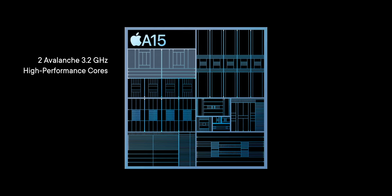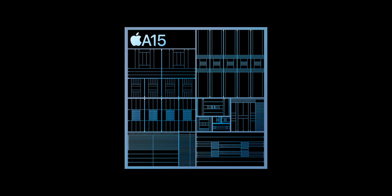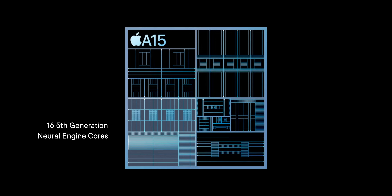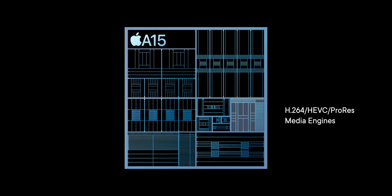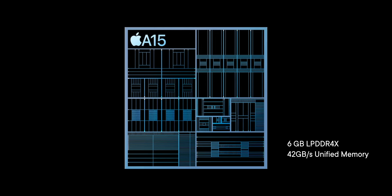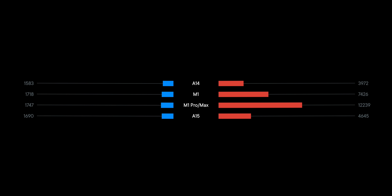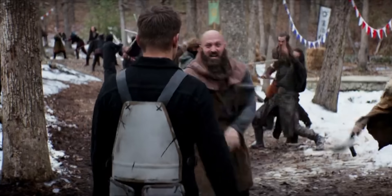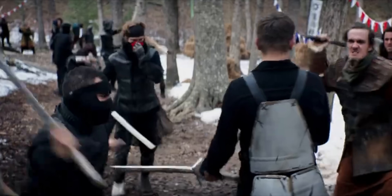A15 has two Avalanche P cores at up to 3.2 GHz, four Blizzard E cores at up to 2 GHz, up to five G14 GPU cores, 16 next-generation Neural Engine cores, ProRes alongside H.264 and H.265 in those media engines, and 6 GB of unified memory at 42 GB/s — bringing it to 1690 single-core and 4645 multi-core. That's also where you start hitting benchmark limitations, since it's increasingly hard to distinguish E core vs P core work, or media engine vs GPU. On A15, the E cores got way more performant, the P cores got more efficient, the GPU got outrageous, and those media engines enabled work that wasn't even possible on a phone before — faster, and just plain cooler.